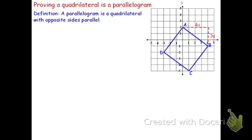AB has a slope of negative 3 fourths. BC has a slope of 4 thirds. DC has a slope of negative 3 fourths. And AD has a slope of 4 thirds.